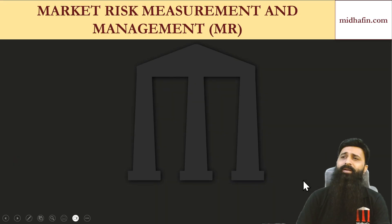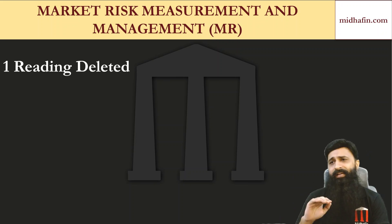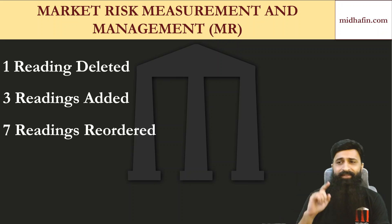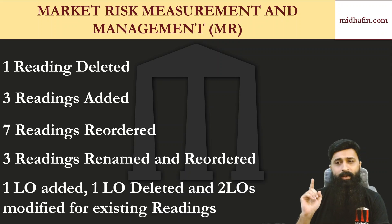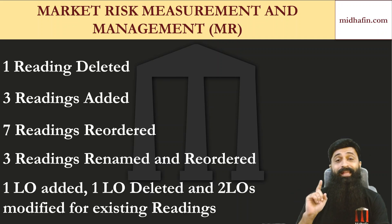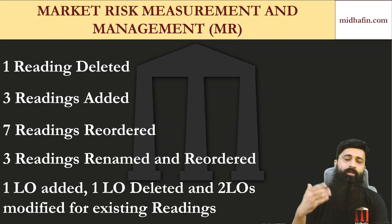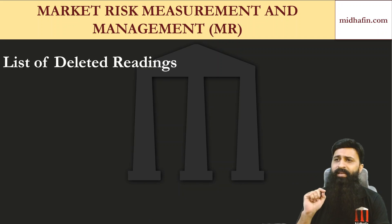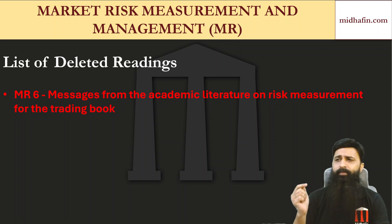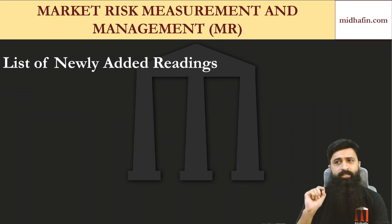In market risk measurement and management, one reading has been deleted, three readings have been added, seven readings have been reordered, and three readings have been renamed as well as reordered. One learning objective has been added, one has been deleted, and two have been modified for existing readings. For newly added chapters, all LOs will be new, so we will not discuss those separately. The one deleted reading is MR6: 'Messages from the Academic Literature on Risk Measurement for the Trading Book.'